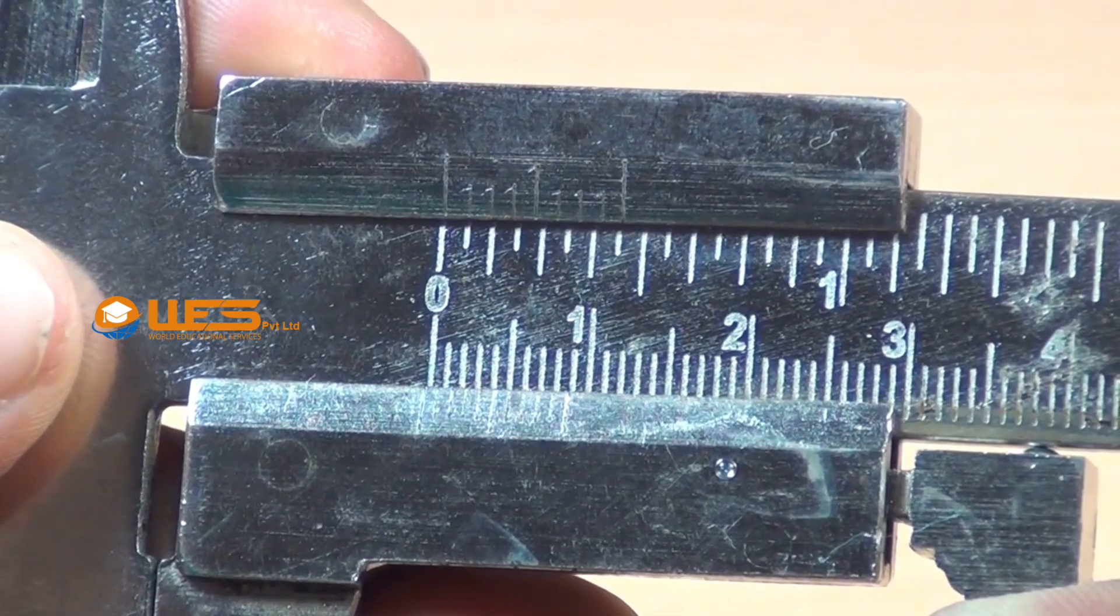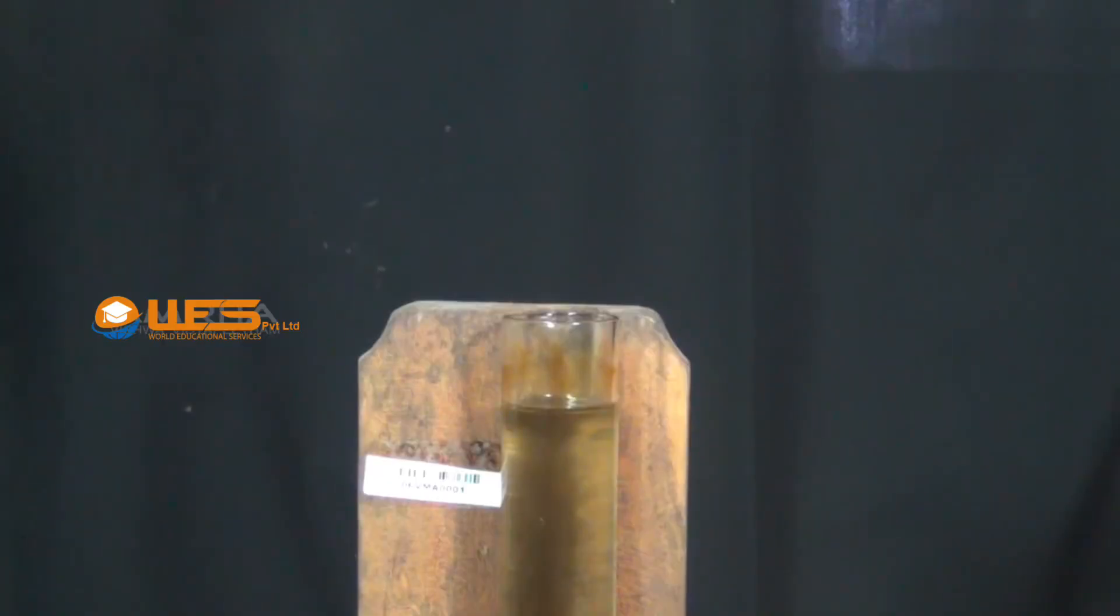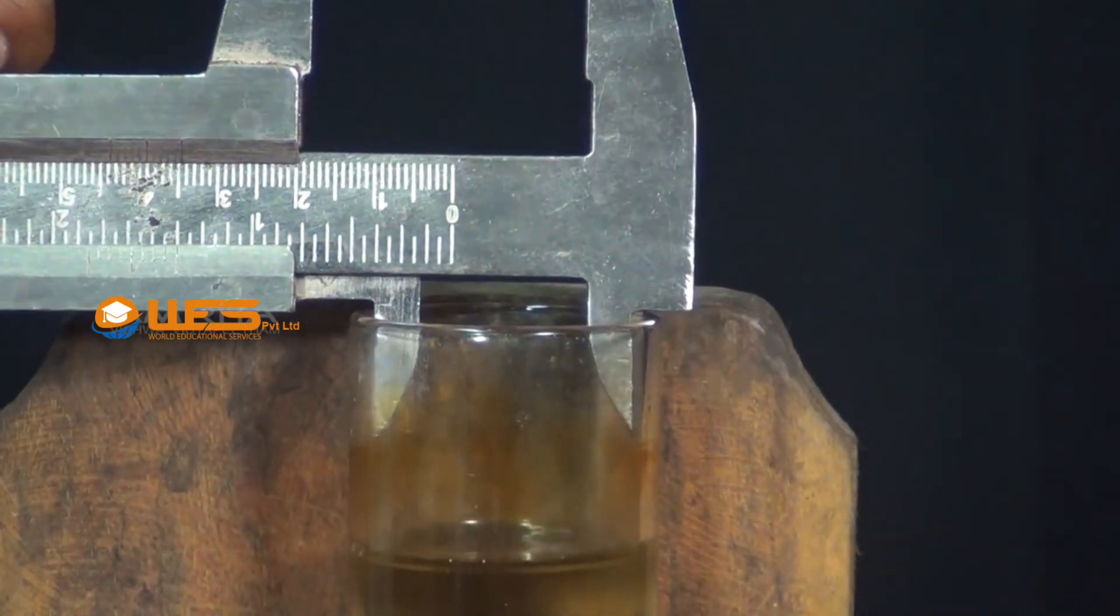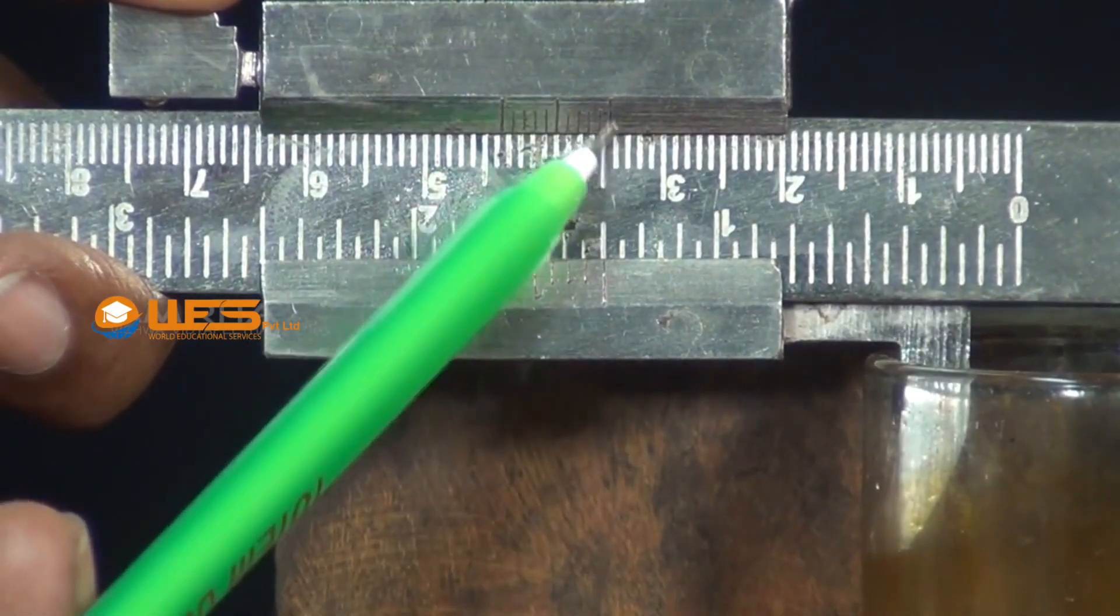Calculate the least count of the vernier calipers. Measure the inner diameter of the viscometer using the vernier calipers. Hence, its inner radius can be found.